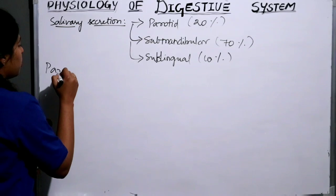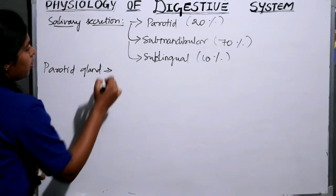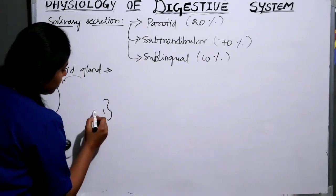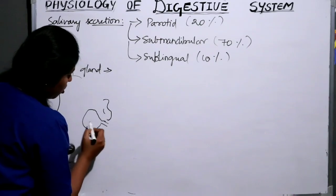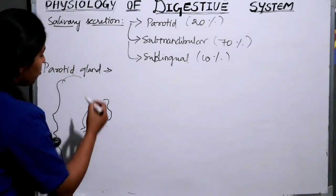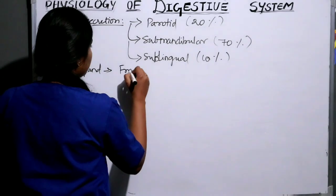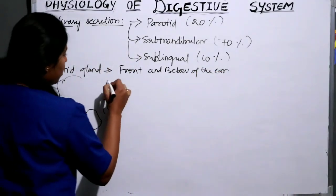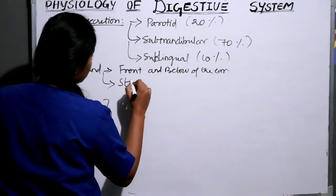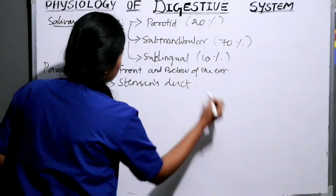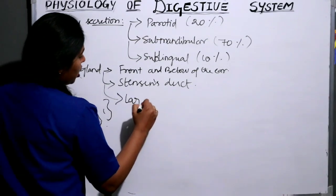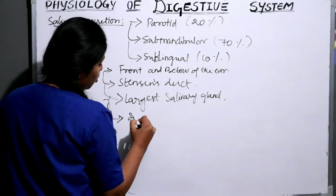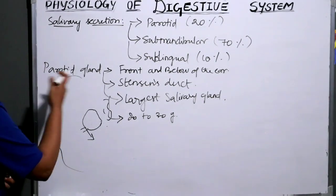First, we will discuss about the parotid gland. It is situated just in the front and below of the ear. It empties its secretion into the mouth by Stensen's duct. It is the largest salivary gland and it weighs up to 20 to 30 grams.